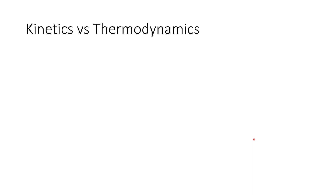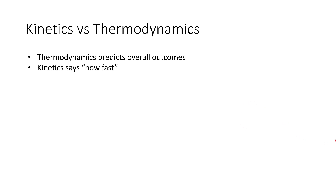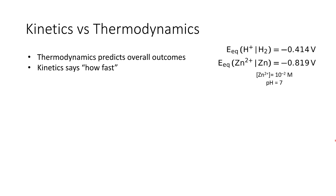We always have a struggle between kinetics and thermodynamics. Thermodynamics predicts overall outcomes for our reactions and cell potentials, while kinetics says how fast something happens. Consider a cell where we've dissolved zinc chloride in solution at 10⁻² molar and maintain the pH at 7. We can see two possible reductions: either reducing H⁺ to hydrogen gas, or reducing Zn²⁺ to zinc metal. So more than one outcome can come out of this cell — are we going to reduce zinc or reduce hydrogen?